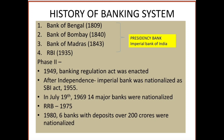The first bank was the Bank of Bengal, established in 1809. The second was the Bank of Bombay in 1840, and the third was the Bank of Madras in 1843. These three banks were merged to form the Presidency Bank, which became the Imperial Bank of India.